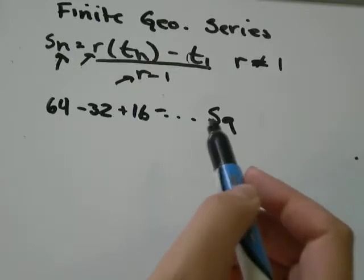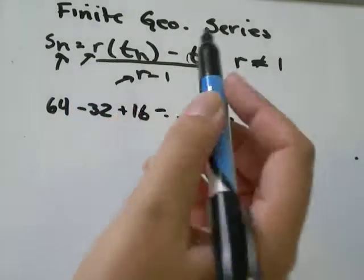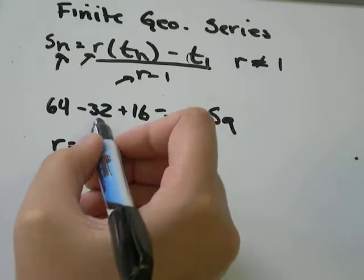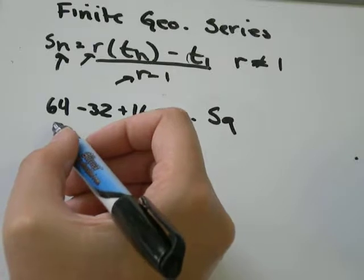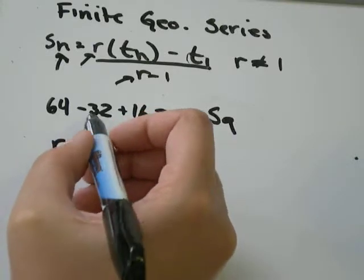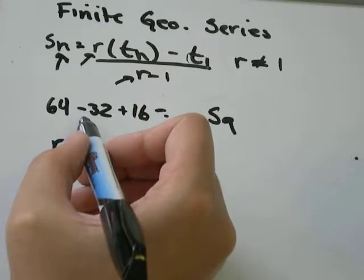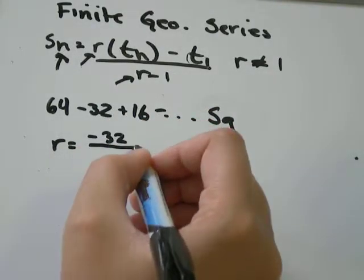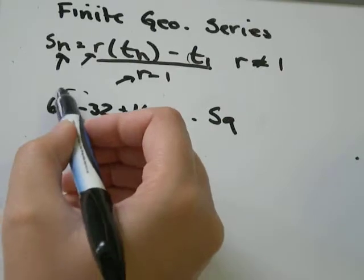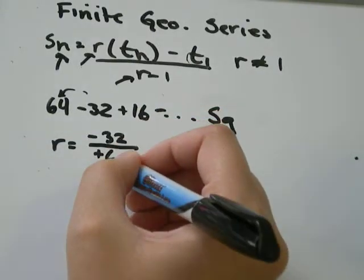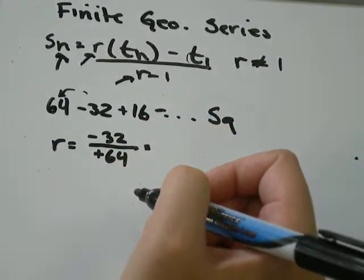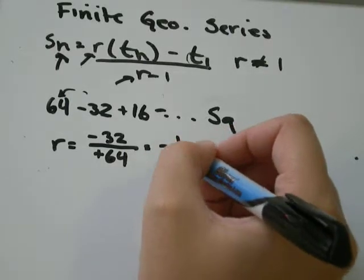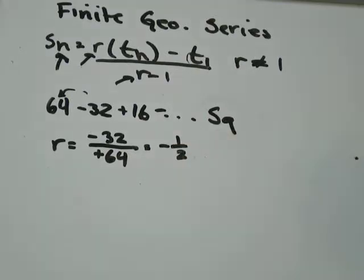The first thing you want to do is figure out what R is. We'll need R in the formula. R, all you need to do is take one term and divide it by the term in front of it. It's really important that you pay attention to positive and negative signs. So I'm going to choose this term, so it's negative 32 and divide by the term in front of it, which was positive 64. When you get negative 32 divided by 64, you should end up with negative 1 over 2, so negative 1 half.